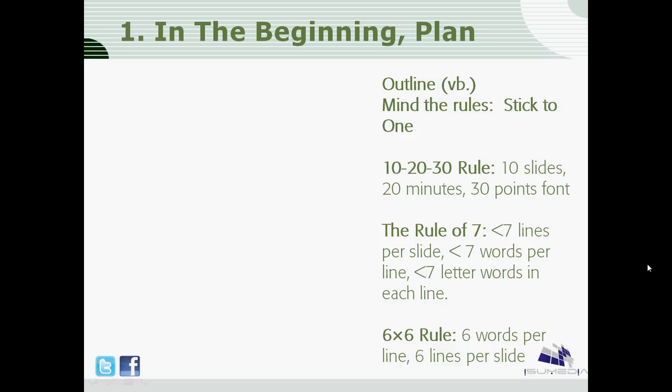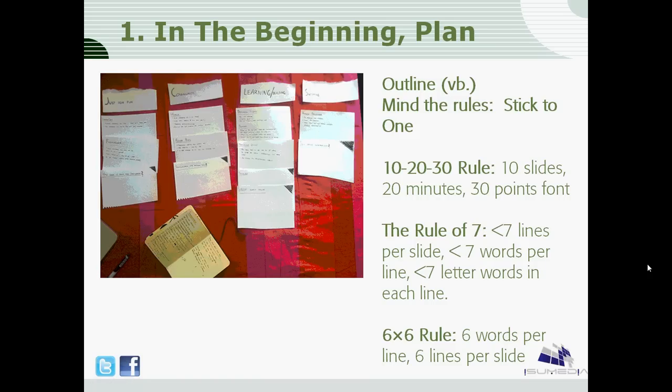There are three rules you should be mindful of — you can choose any one. There's the 10-20-30 rule: you should have 10 slides, your presentation should be 20 minutes, and your font size should not be more than 30 points. There's the Rule of Seven: every slide should have under seven lines, under seven words per line, and under seven letters per word. The 6x6 rule says you should have six words per line and six lines per slide.